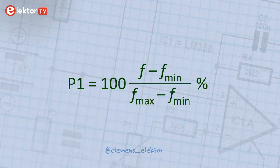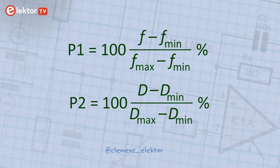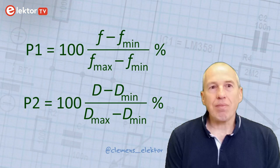p1 is 100 times the frequency minus the minimum frequency, over the maximum frequency minus the minimum frequency, and this is a percentage. p2, also a percentage, is 100 times the duty cycle minus the minimum duty cycle, over the maximum duty cycle minus the minimum duty cycle. And there we are.